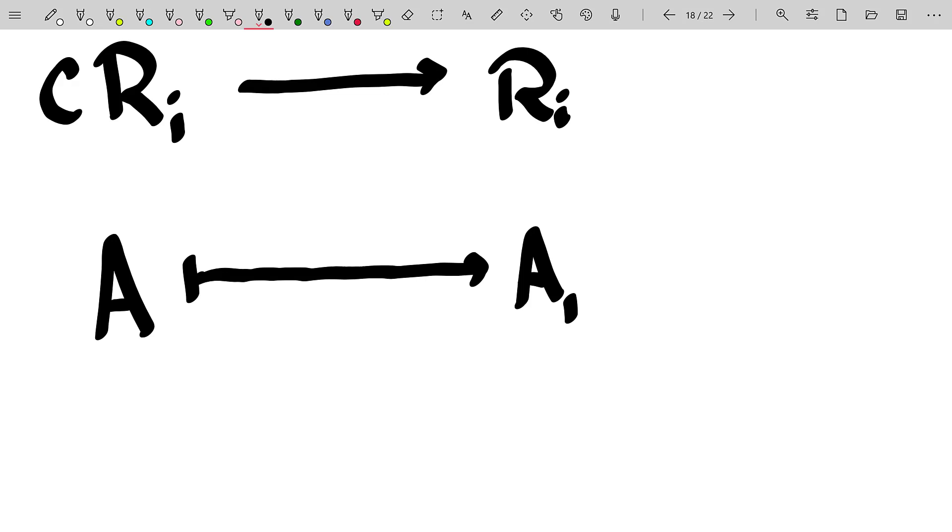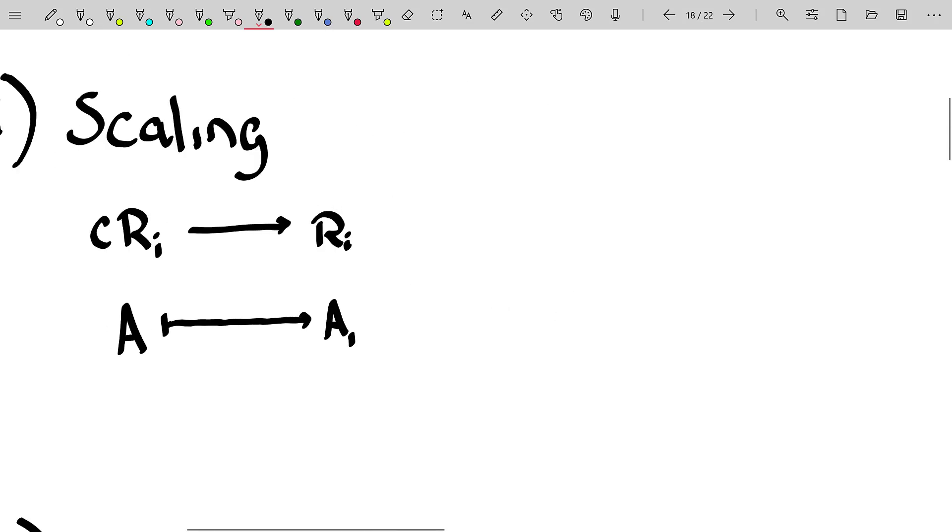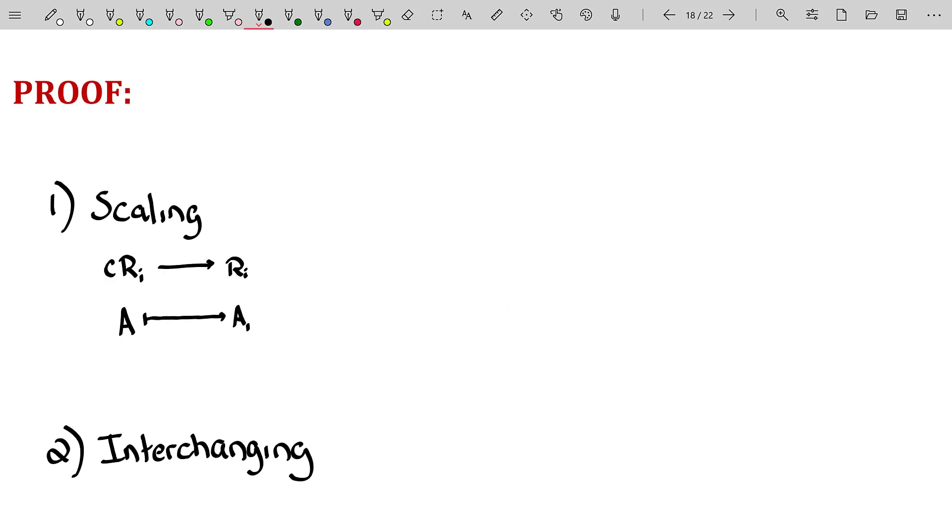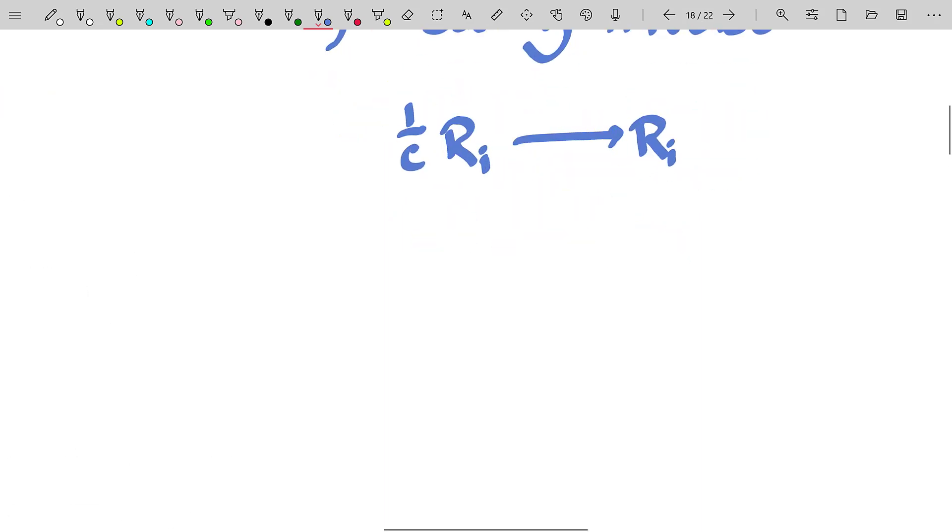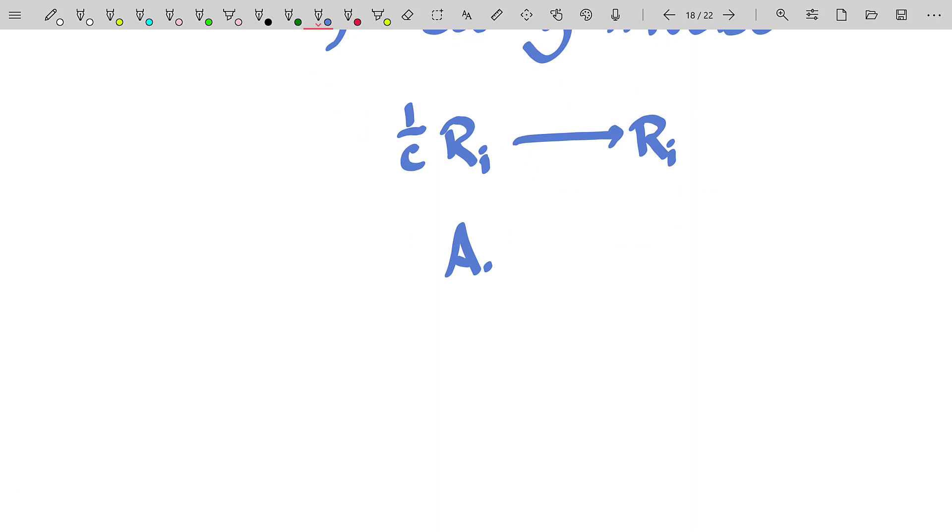Well, luckily, C is non-zero. So undoing a multiplication by C is the same thing as dividing by C. So to undo that row scaling, we will take 1 over C times row I and create the new row I, which actually will be the good old same row I from the original matrix A. So this will take our A sub 1 and transform it back into the original matrix A.